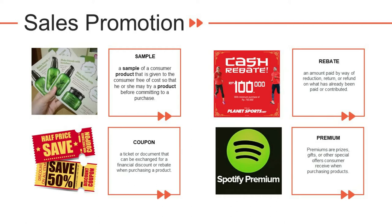Second is rebate — an amount paid by way of reduction, return, or refund on what has already been paid. For example, Planet Sports gives a cash rebate of 500,000 or 100,000. Next is coupon — a ticket or document that can be exchanged for a financial discount or rebate when purchasing a product.